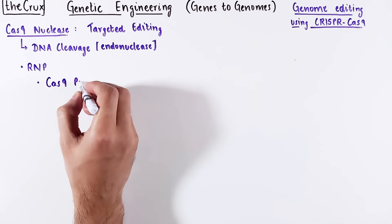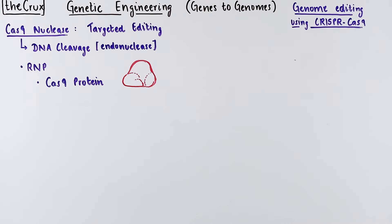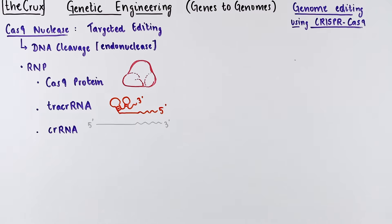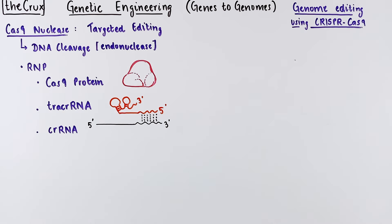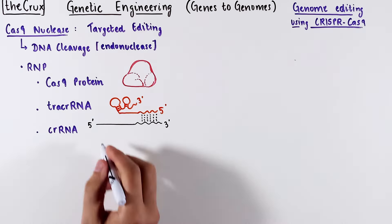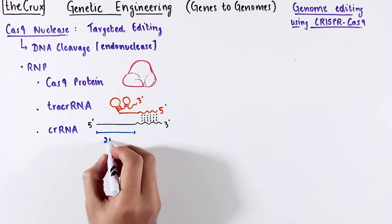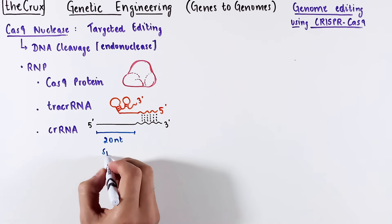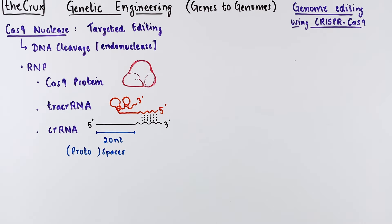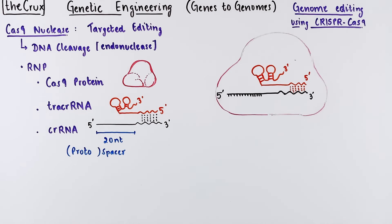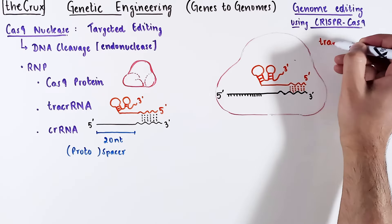It is made up of three components: the Cas9 protein itself, the tracrRNA, and a CRISPR RNA. The CRISPR RNA is partially complementary to the tracrRNA. The 20 nucleotides at the 5' end of the CRISPR RNA make up the spacer or protospacer region. All three of these components form the active Cas9 endonuclease.